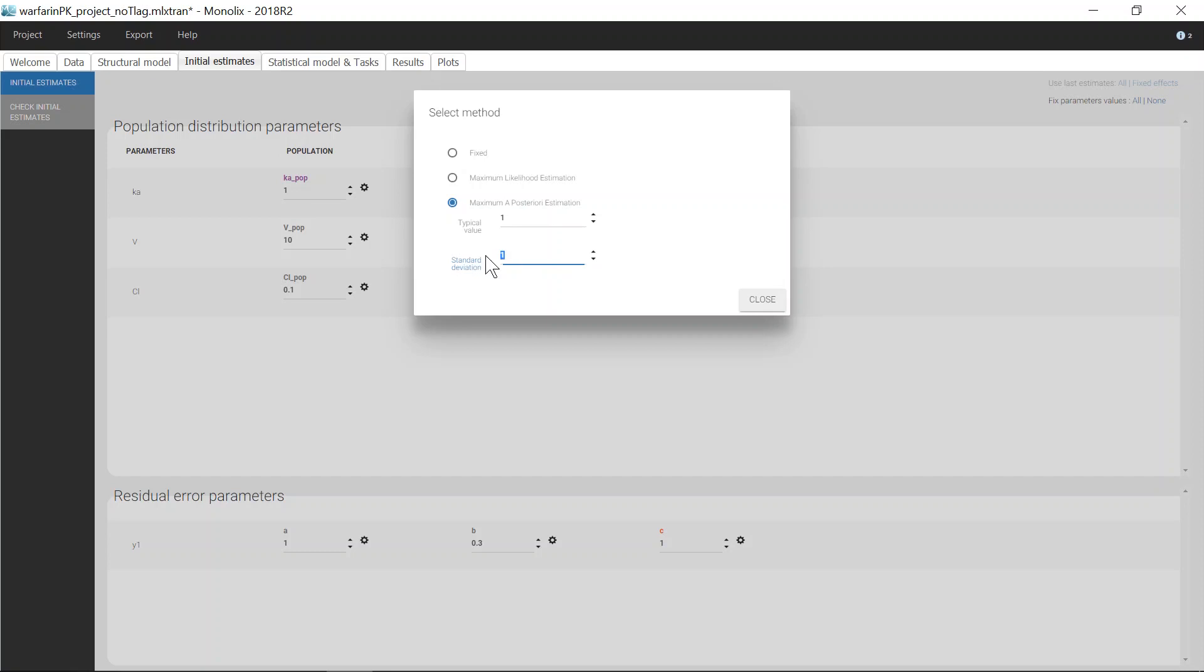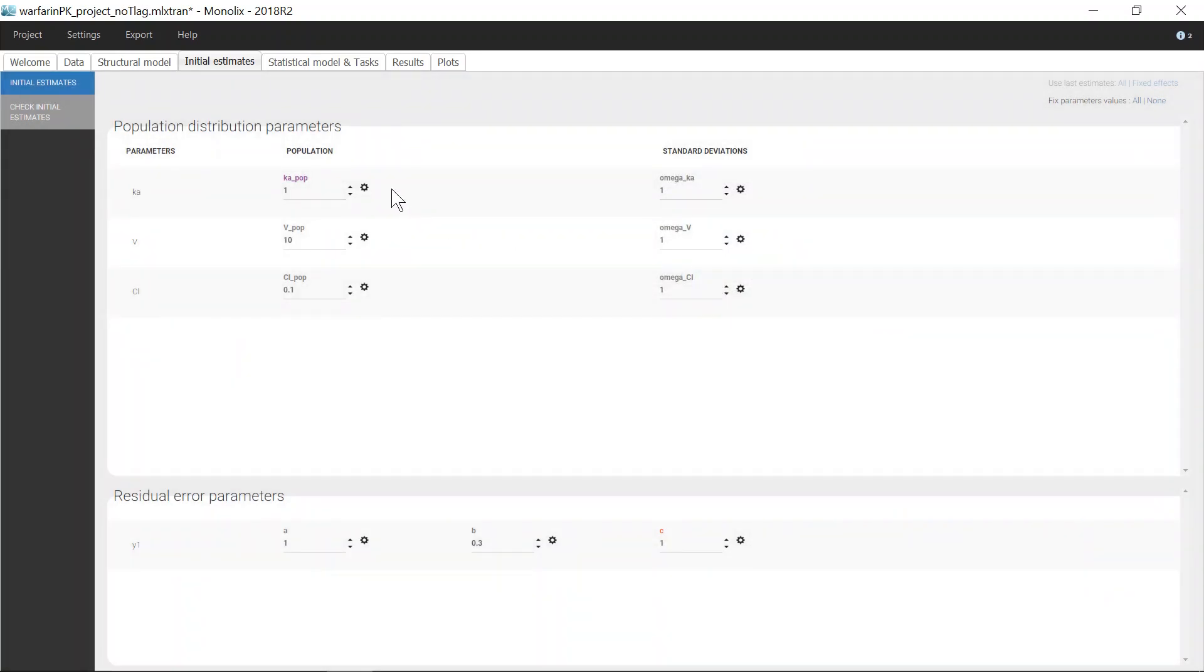For example, I will choose a standard deviation of 0.1. Parameters to be estimated with the Bayesian approach are colored in purple.